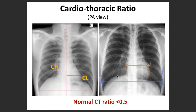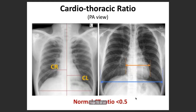Another very important concept is the Cardiothoracic Ratio, which is measured mostly in the PA view only. You draw a line from the midline and measure the distance on the right side and left side, then divide them. The normal CT ratio is less than 0.5. A helpful mnemonic: make a fist in front of the x-ray and point out the index finger and little finger — if the whole heart fits between them, the CT ratio is normal. If it goes beyond that, there may be cardiomegaly.